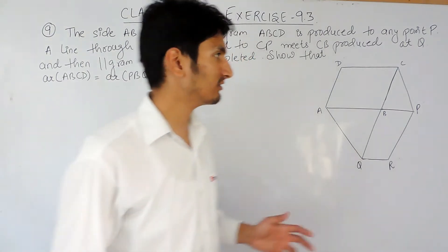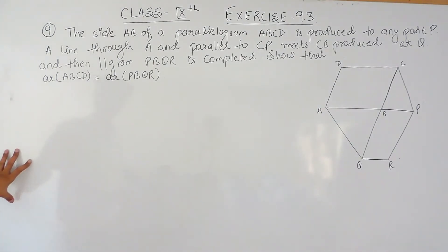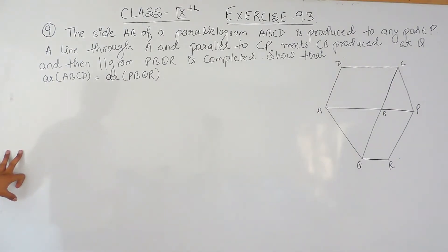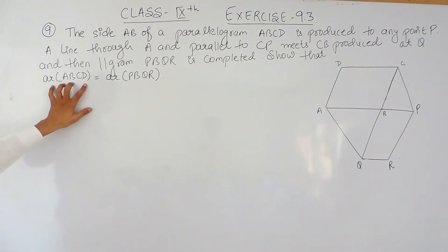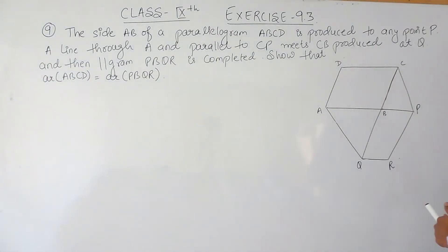In this video we are going to solve the 9th question of Exercise 9.3. The question says: the side AB of a parallelogram ABCD is produced to any point P. A line through A and parallel to CP meets CB produced at Q, and then parallelogram PBQR is completed. We have to show that the area of parallelogram ABCD equals the area of parallelogram PBQR.